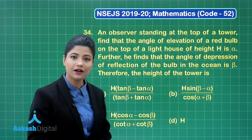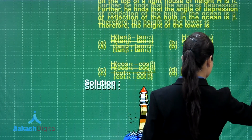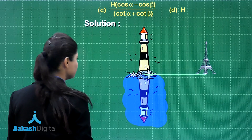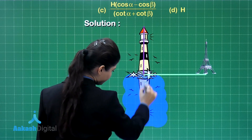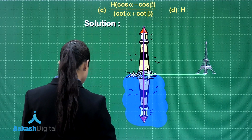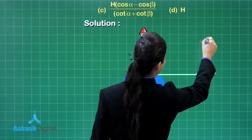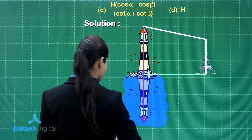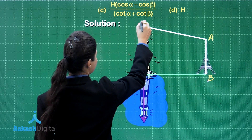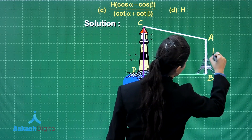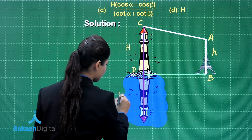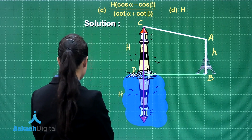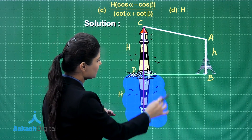We need to draw a diagram based on these conditions. The lighthouse is CD and the tower is AB with height small h, while the lighthouse has height capital H. The reflection forms at the same distance below the water surface because water acts as a plane mirror. So if the lighthouse height is H, its reflection is also at depth H below the water level.